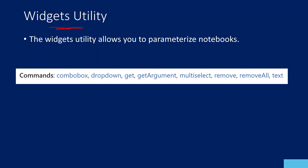So what is this Widgets Utility? This is one of the utilities available inside the Databricks Utilities. This Widgets Utility allows you to parameterize the notebook. What is the meaning of parameterization? Let's assume you have a notebook with a set of code and you want some values inside the notebook to be dynamic — whenever you run the notebook, you want to pass values into some parameters or variables. So that is called parameterization, and this Widgets Utility helps you achieve that. This video we are going to discuss what commands are available inside this Widgets Utility with a small demo.